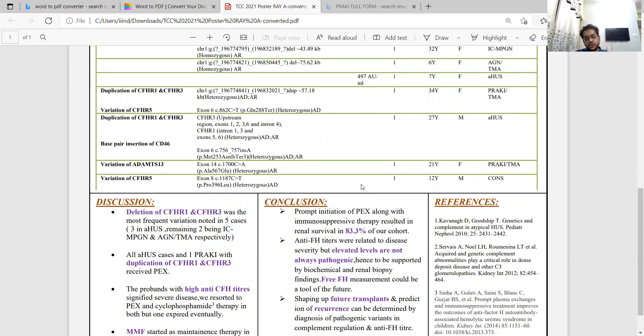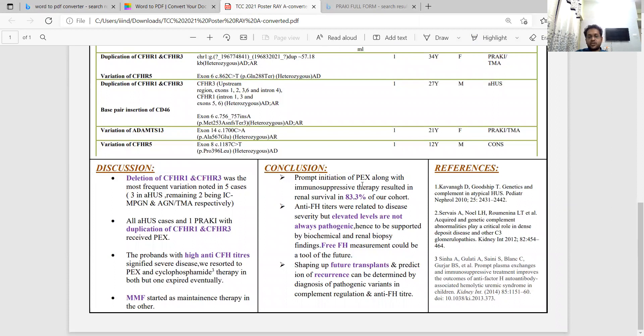In conclusion, the highlight was deletion of CFHR1 and 3 followed by duplication of the same. All atypical HUS patients and the one with C3GN received plasma exchange. In patients with high anti-CFH titers, they received cyclophosphamide as immunosuppression therapy, and the patient who survived received MMF as maintenance.